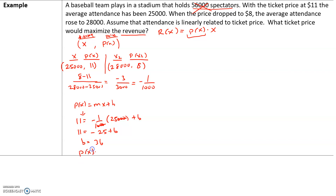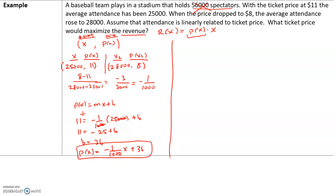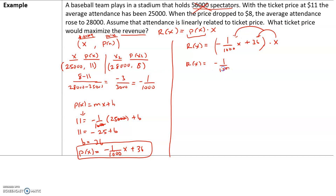So the price-demand function is P(x) = −(1/1,000)x + 36. But we actually want to maximize revenue. The revenue function is R(x) = P(x) · x = [−(1/1,000)x + 36] · x. Distributing gives R(x) = −(1/1,000)x² + 36x.